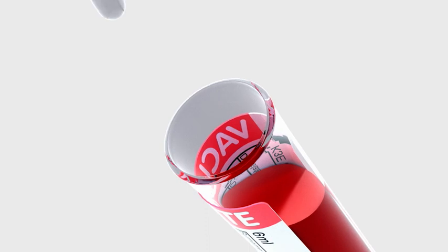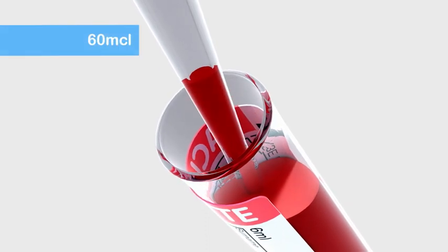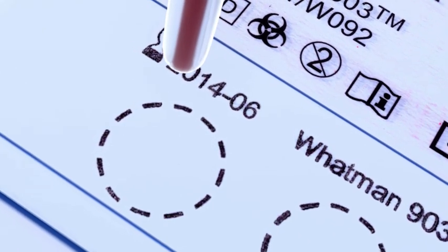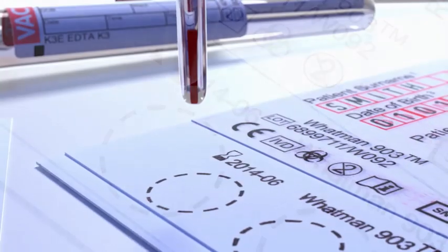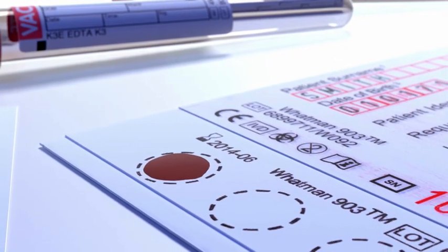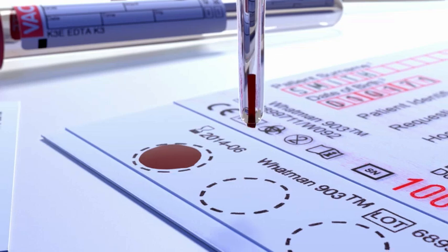Then set a handheld pipette to sixty microliters and fill the pipette tip with blood. Hold the pipette tip above the center of a circle, close to the surface, but without touching it. Gradually discharge the blood and let it soak into the paper, filling the circle completely with a single application.